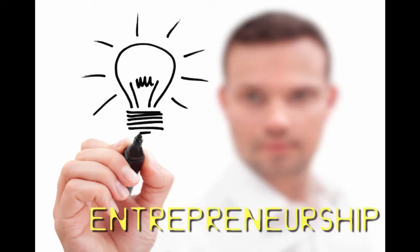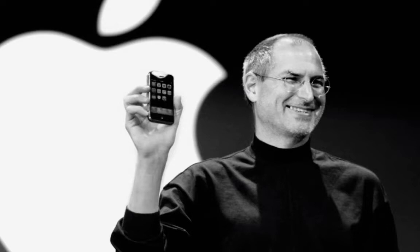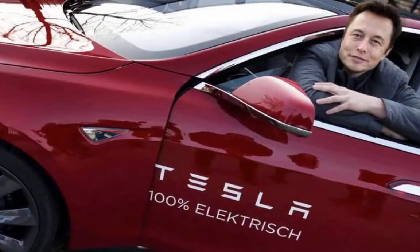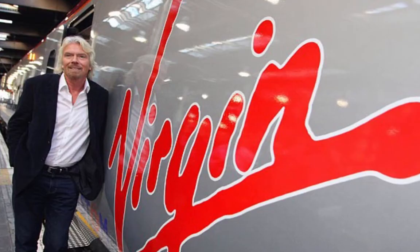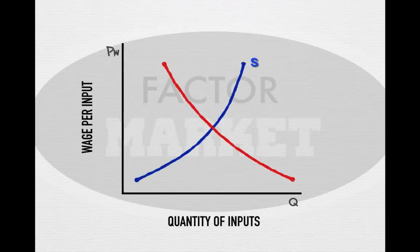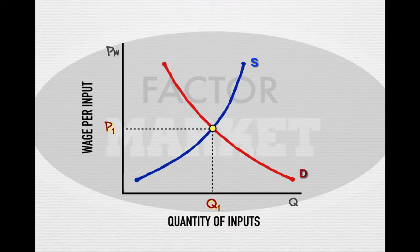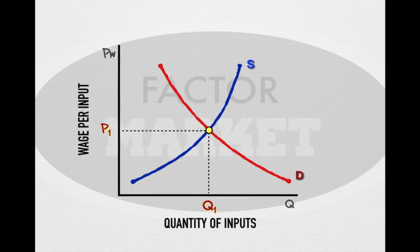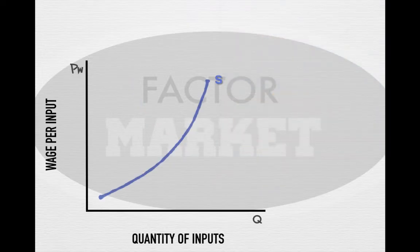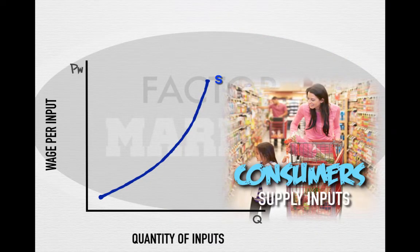When all three factors of production are purchased and assembled together to produce goods, this is known as entrepreneurship. Every great business starts with a great idea — Steve Jobs, Warren Buffett, Elon Musk, Richard Branson are all entrepreneurs. They started with an idea, took risks to acquire resources, and created successful businesses. The factor market graph is set by wage per input and quantity of inputs. Natural market forces of supply and demand set the equilibrium wage at P1 and quantity of inputs at Q1. Firms demand inputs to make products for profit; consumers supply inputs for wages to gain income.